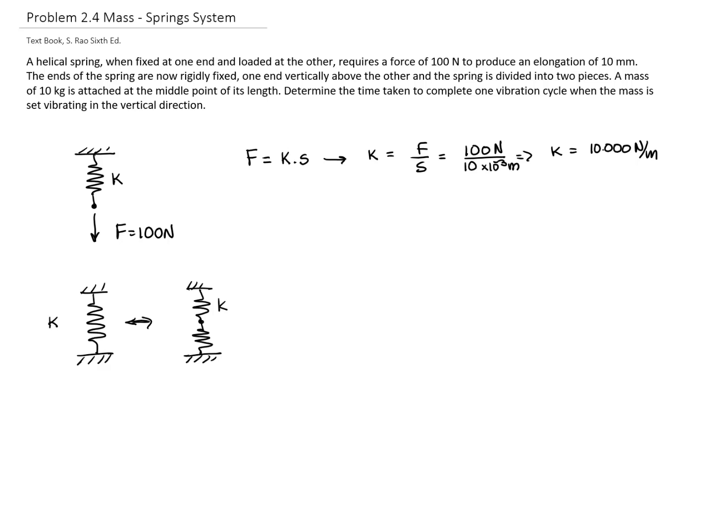In order for those systems to be equivalent, let me call this k_nu. Since I divided right in the middle, in order for those two to be equivalent, since this is in series, I can write that 1/k_nu plus 1/k_nu has to equal 1/k.